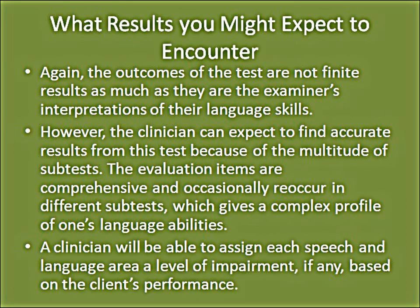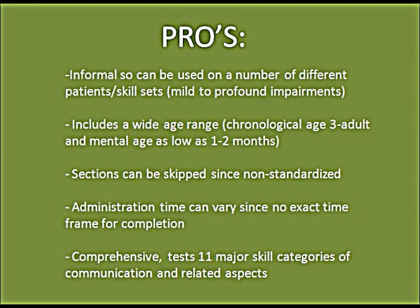The outcomes of this test are not finite results but rather the examiner's interpretations of language skills. However, the clinician can expect accurate results because of the multitude of subtests — evaluation items are comprehensive and occasionally reoccur in different subtests, giving a complex profile of one's language abilities. A clinician will be able to assign each speech and language area a level of impairment based on the client's performance. Pros of the FCPR include: it is informal and can be used on patients with varying skill sets ranging from mild to profound impairments; it includes a wide age range from three years to adult, with mental age as low as one to two months; sections can be skipped since it is non-standardized; and it comprehensively tests 11 major skill categories.